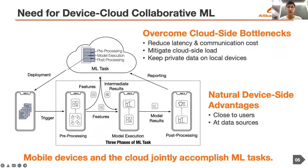To overcome this problem, the new device cloud collaborative machine learning paradigm emerged. The key principle is that part of a machine learning task can be offloaded to mobile devices, and the cloud and mobile devices collaboratively accomplish the whole task. This paradigm can leverage the natural device-side advantages of being close to users and at data sources, thereby reducing latency and communication costs, mitigating the cloud-side load, and keeping private data on local devices.